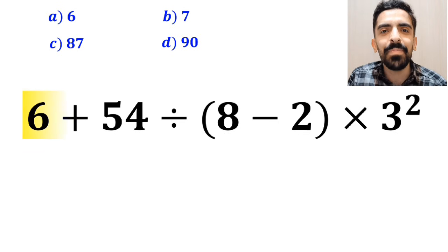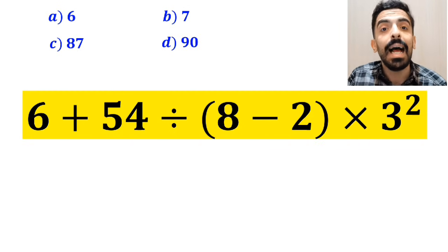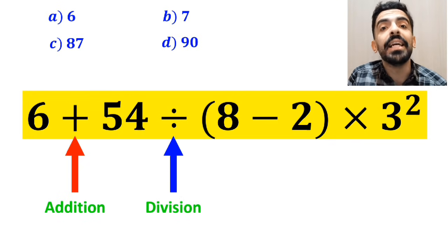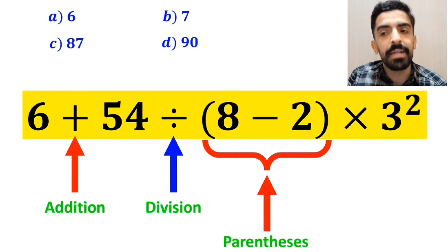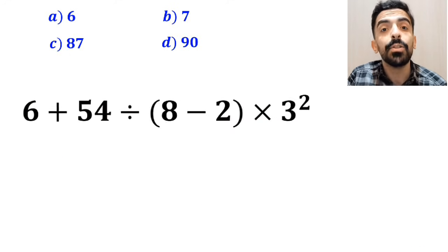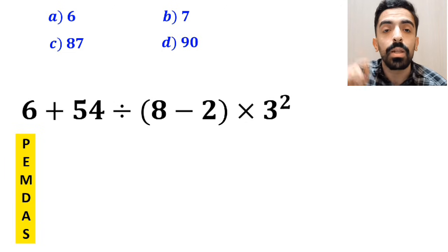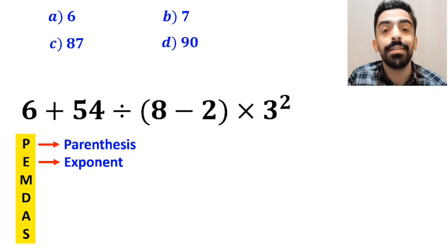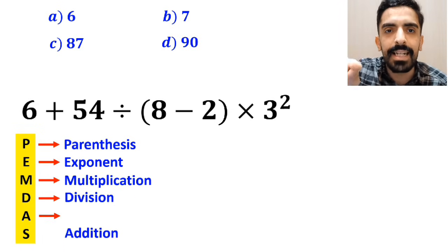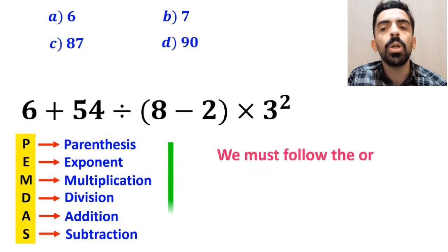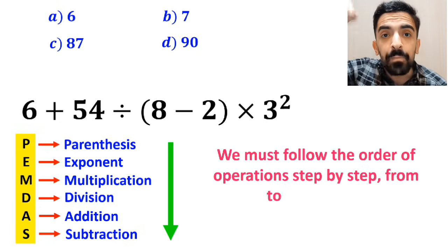Now let me show you how to solve this expression properly. As you can see in the image, this expression has an addition sign, then a division sign, followed by parenthesis, then a multiplication, and finally an exponent. To solve this problem, we must follow the PEMDAS rule. In this rule, P stands for parenthesis, E stands for exponent, M stands for multiplication, D stands for division, A stands for addition, and S stands for subtraction. We must follow the order of operations step by step from top to bottom.